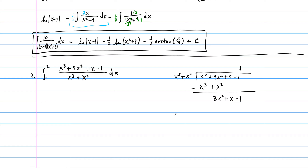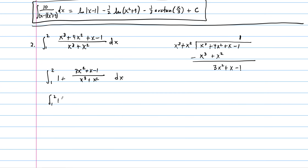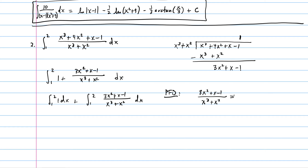Our integrand becomes 1 plus (3x squared plus x minus 1) over (x cubed plus x squared). We use partial fraction decomposition on the second term. The denominator factors to x squared times (x plus 1), so the PFD is A over x plus B over x squared plus C over (x plus 1).